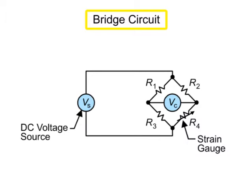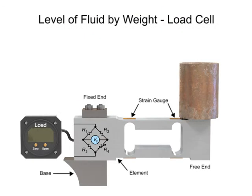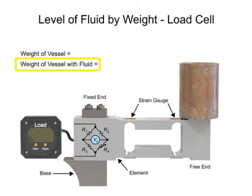Connected to a bridge circuit, the force measured is proportional to the output voltage. The output voltage is converted to a level measurement when vessel weight and vessel fluid density is known.